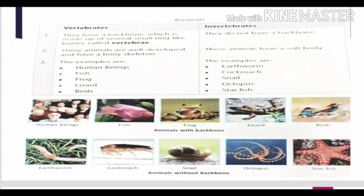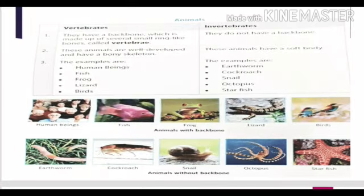Invertebrates' bodies are too soft and slim. Examples of vertebrates are human beings, fishes, frogs, lizards, birds, etc. Examples of invertebrates are earthworm, cockroaches, snails, octopus, and starfishes. All these are invertebrates because they do not have a backbone in them.